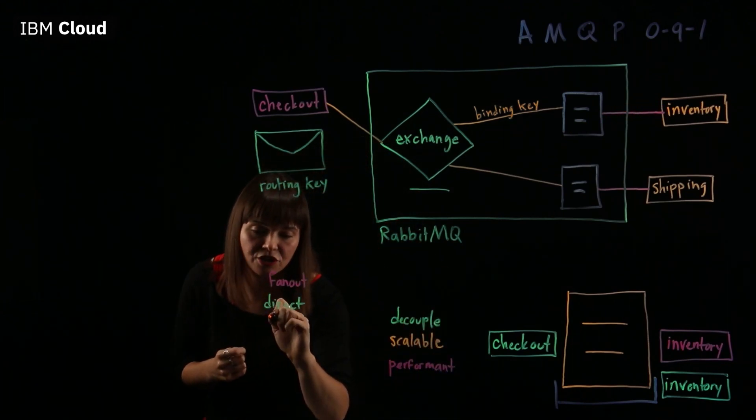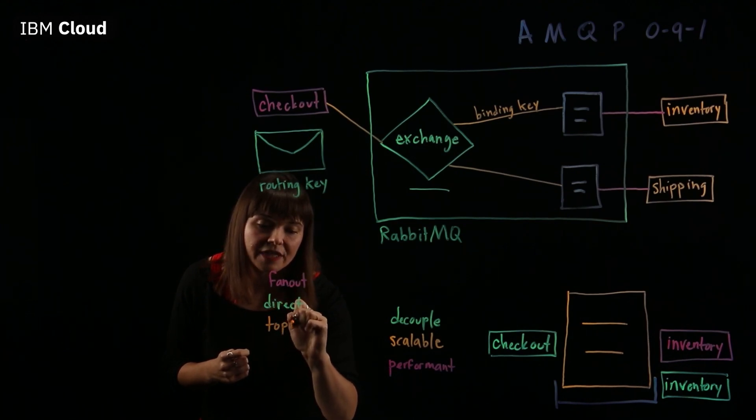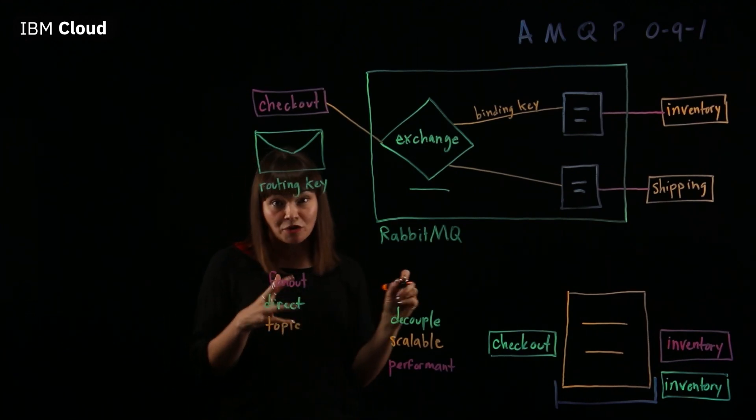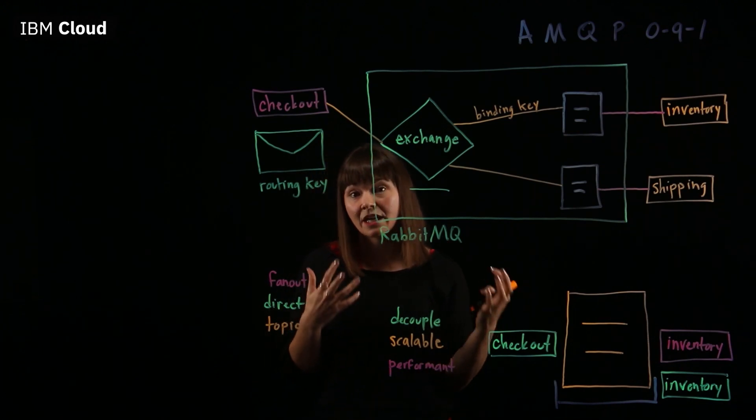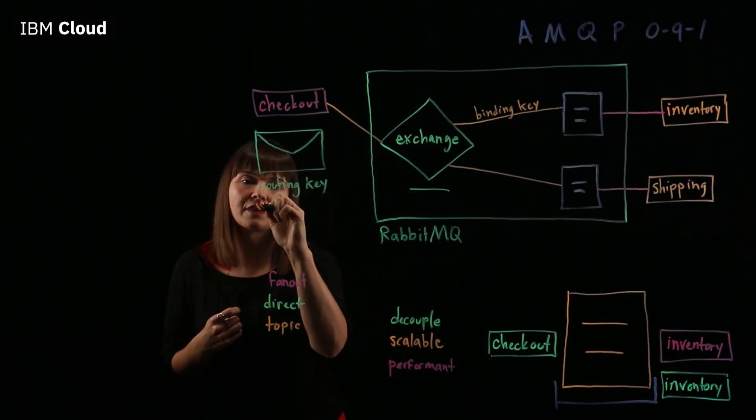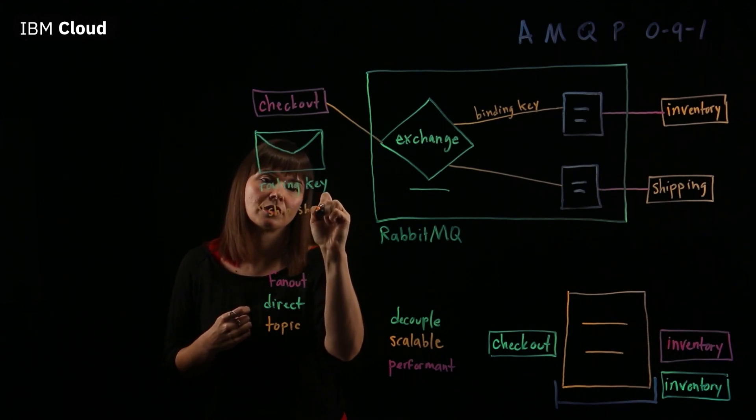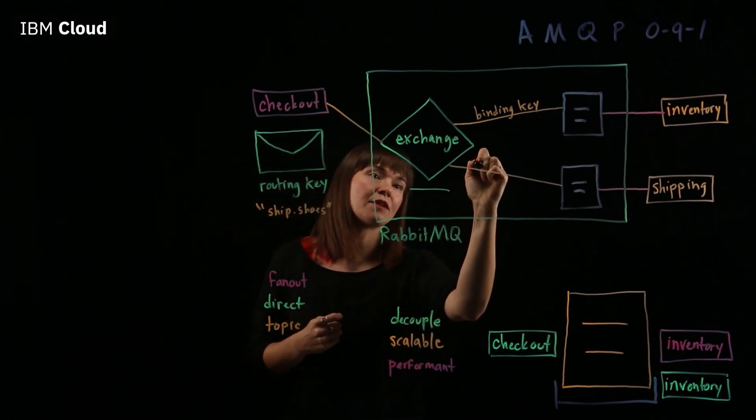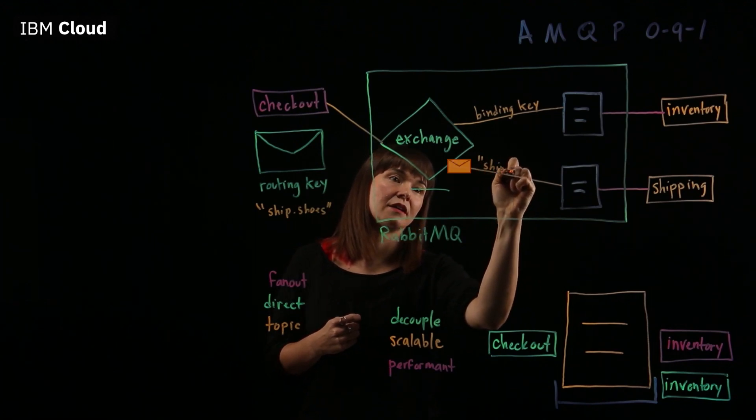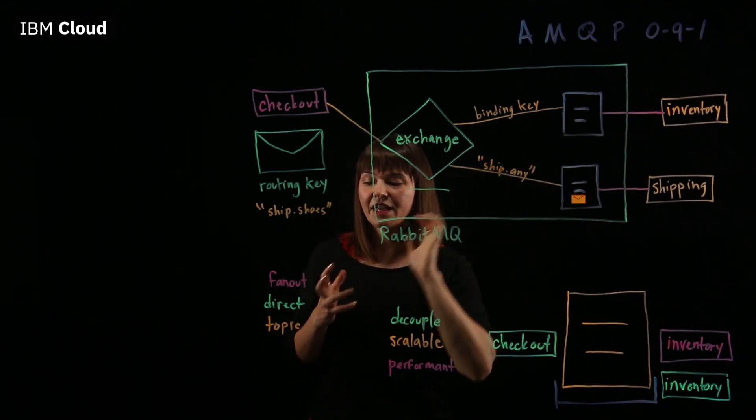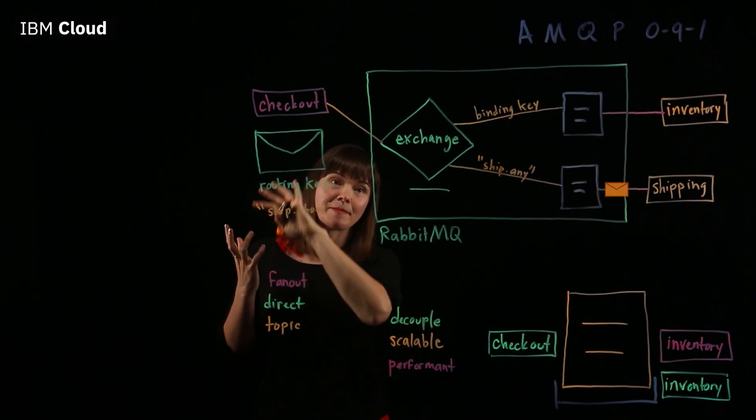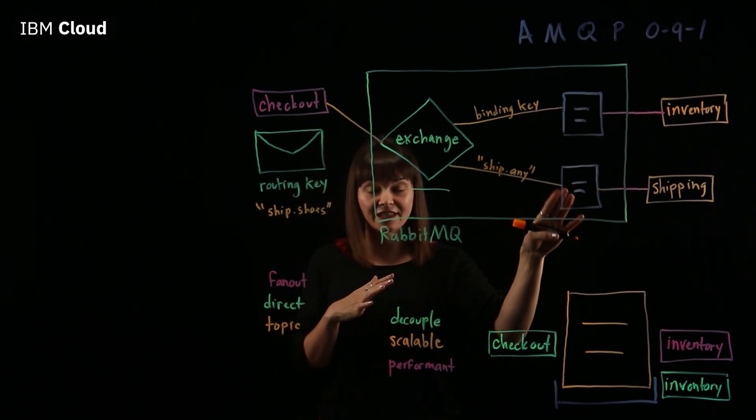Next, we have a topic exchange. With a topic exchange, we can do a partial match between the routing key and the binding key. So if we had a routing key on this message called ship.shoes, and the binding key was called ship.any, and the exchange type was a topic exchange, that message would get routed through to this queue.